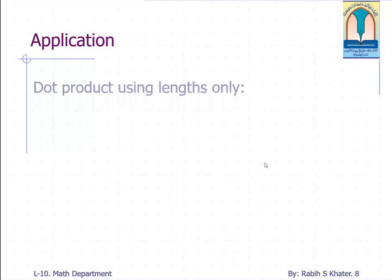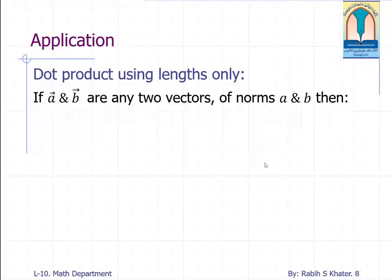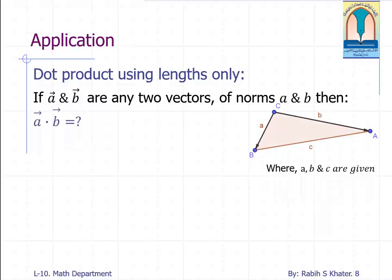Another application. Dot product using lengths only. If we need to find the dot product of the vectors a and b only if we know the measure of the sides of triangle ABC. By now you know the general Pythagoras theorem states that the side c squared equals the sum of the squares of the other two sides minus double the dot product between the two vectors a and b.